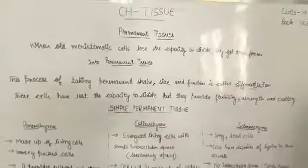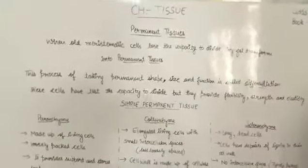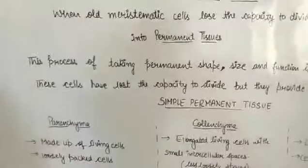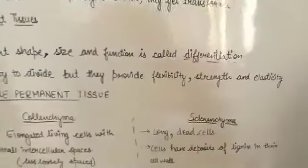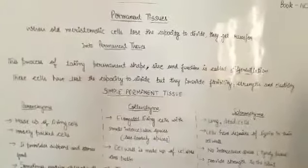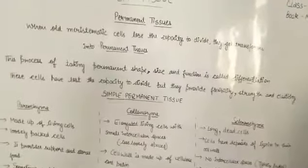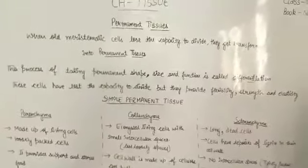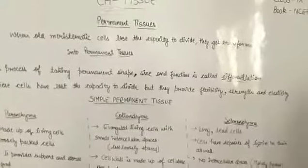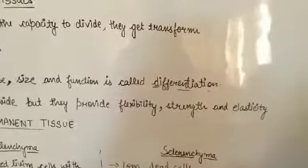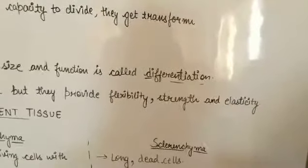Permanent tissue cells have lost the capacity to divide, but they provide flexibility, strength, and elasticity to the plant. When meristematic tissues lose their dividing ability and can no longer help in plant growth, they take the shape of permanent tissue and, as permanent tissue, provide flexibility and strength to the plant.